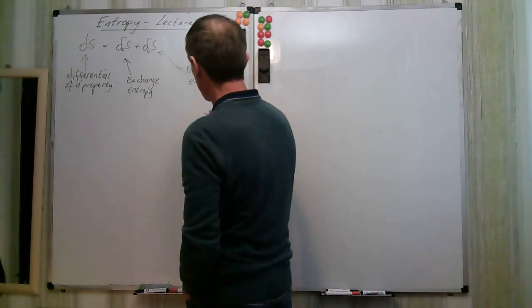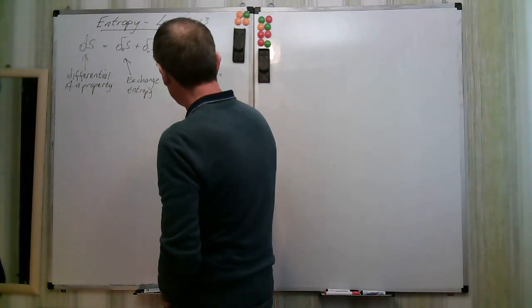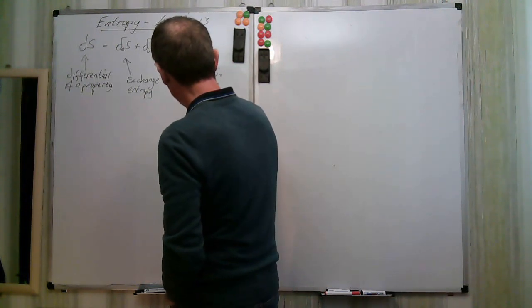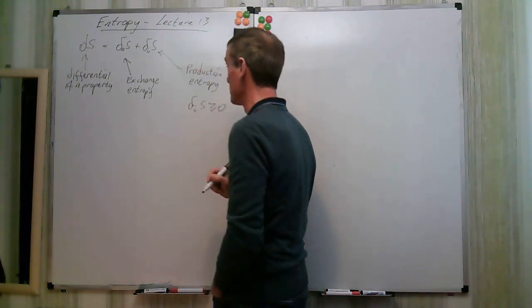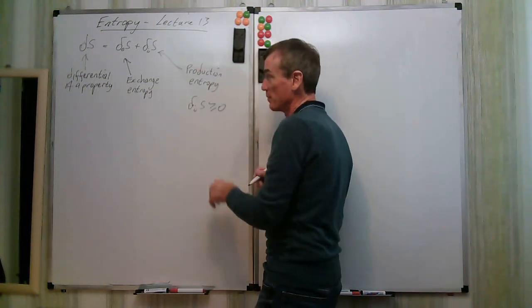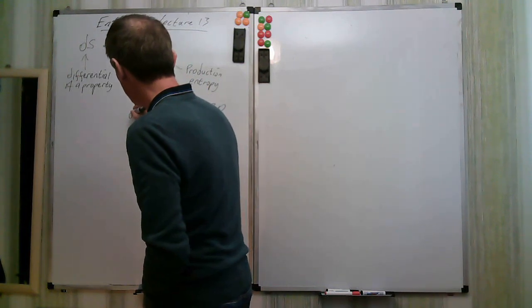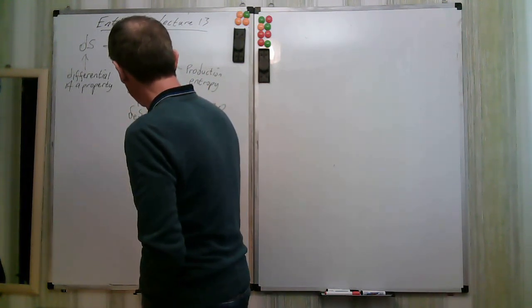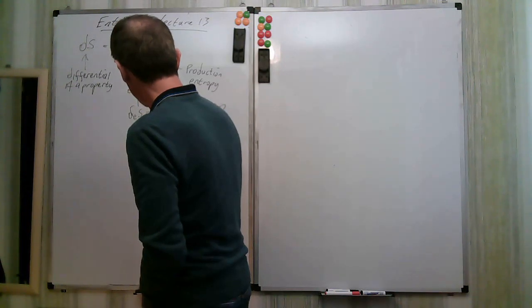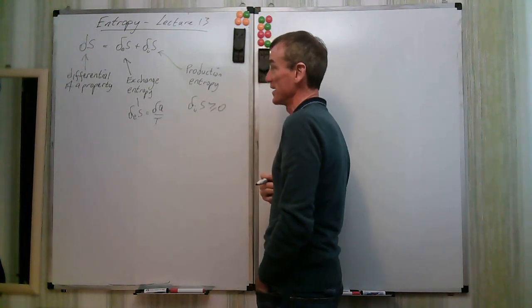We always find that delta_iS is always positive — it is always a positive term. And delta_eS was equal to delta_q over T.